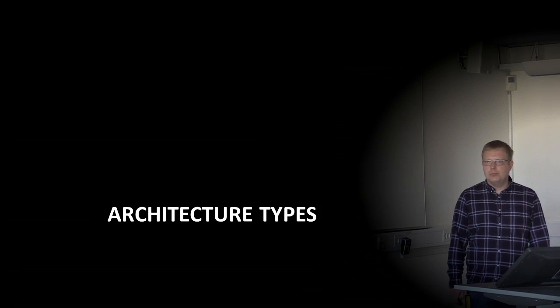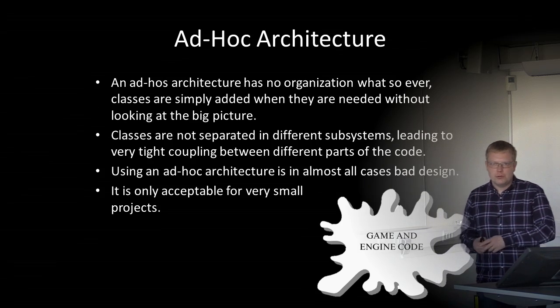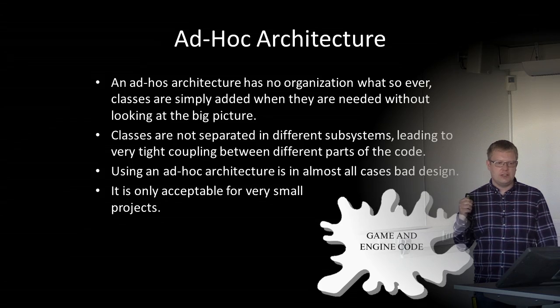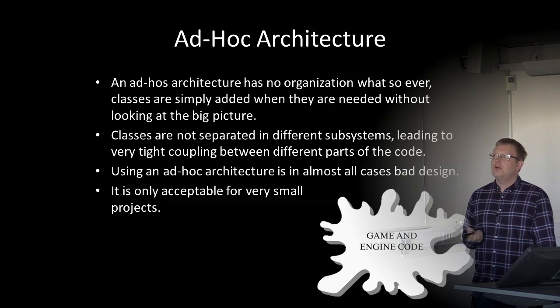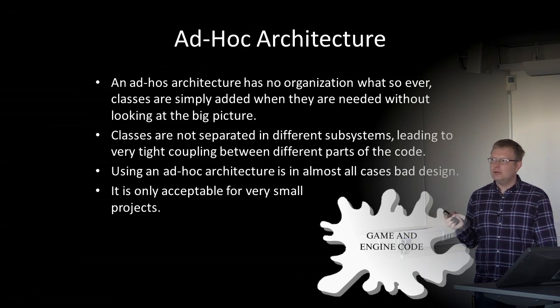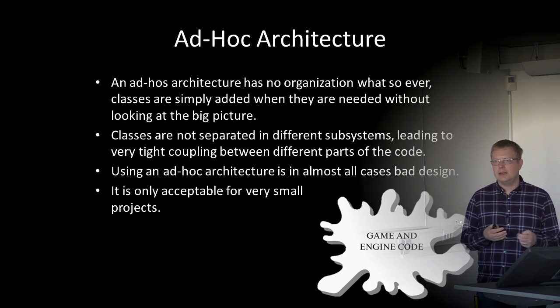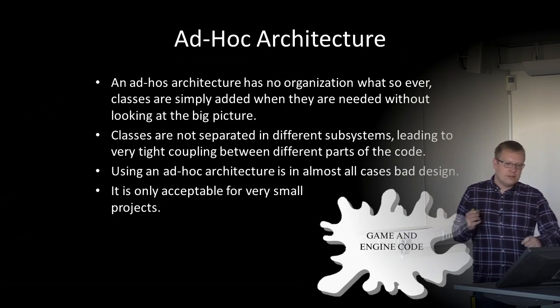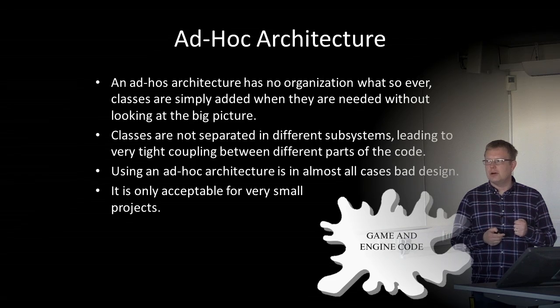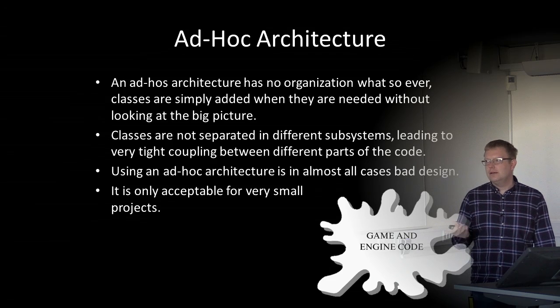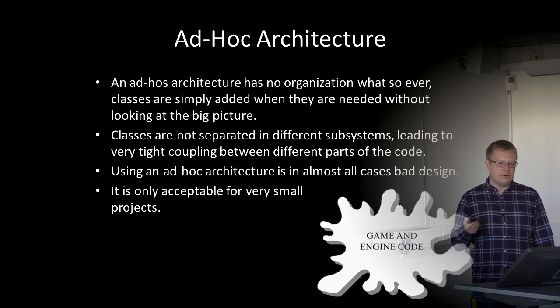There are different types of architectures with their respective pros and cons. The most common one — and the one you're probably most familiar with even if you're not aware of it — is the ad hoc architecture. It means the architecture has no organization whatsoever. Classes are simply added when needed without looking at the big picture, and classes are not separated into different subsystems, leading to very tight coupling. Using an ad hoc architecture is in almost all cases bad design and only acceptable for very small projects.